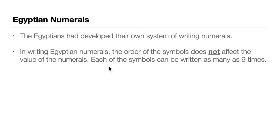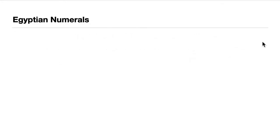This is unlike Roman numerals — if we have a little throwback — where the placement of symbols may add or subtract value. In Egyptian numerals, each symbol can be written as many as nine times. There is no maximum of three per symbol like in Roman numerals.